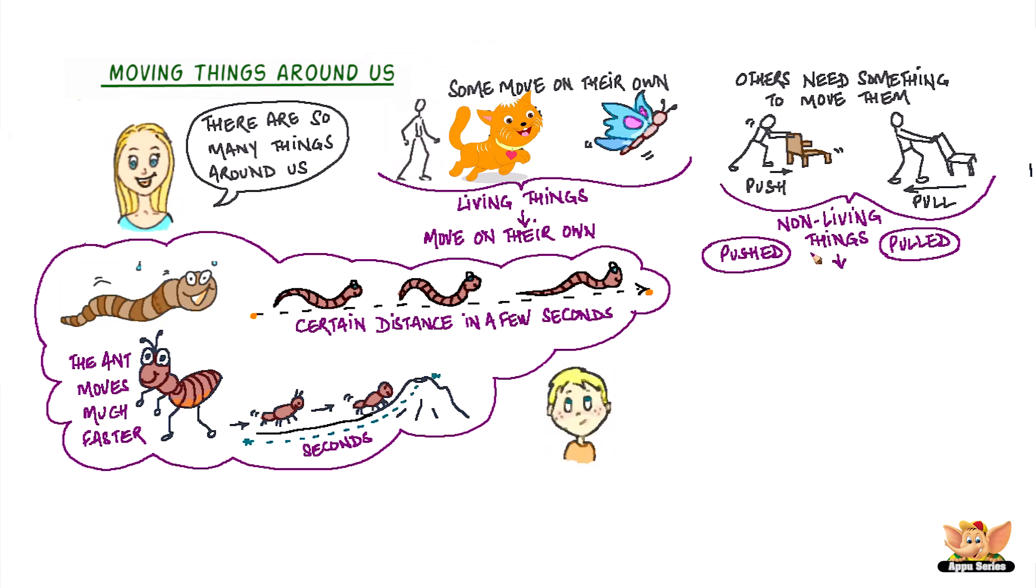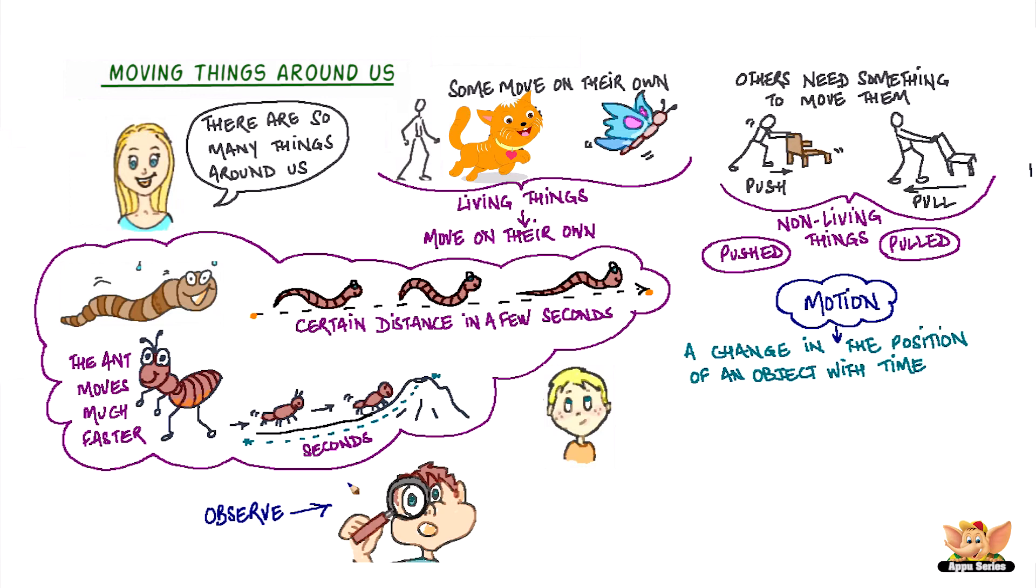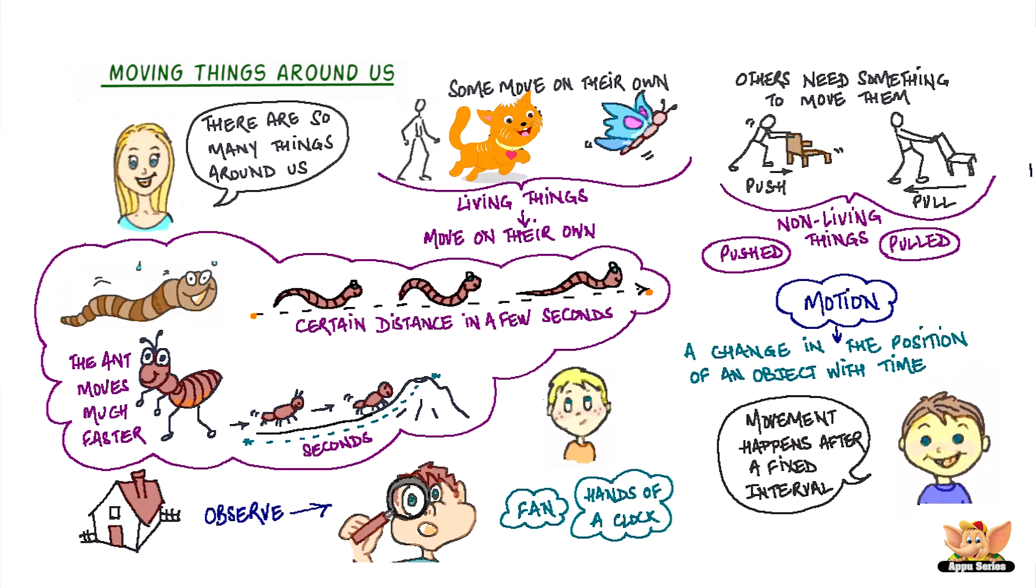So you observe for sure that motion is some kind of a change in the position of an object with time. Observe movement in some non-living things around your house, like the fan or the hands in a clock. How do they move? Here again you will find that movement happens after a fixed interval.